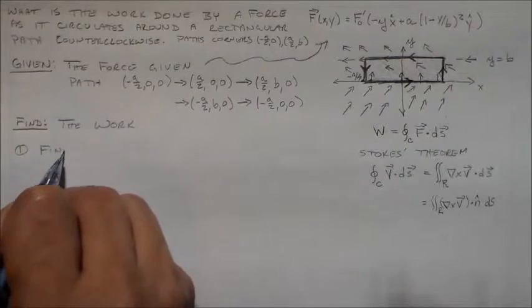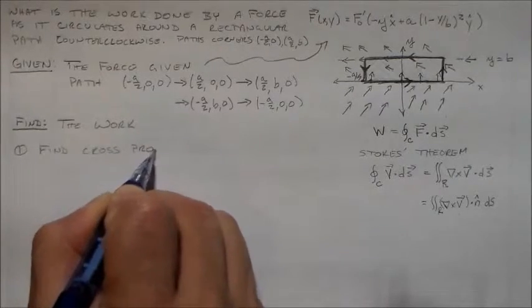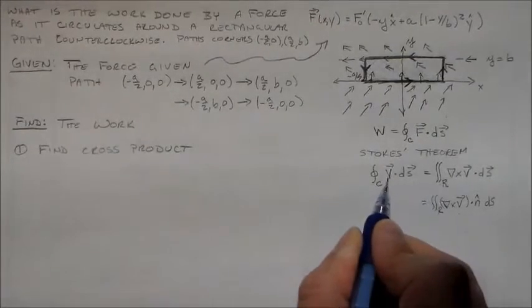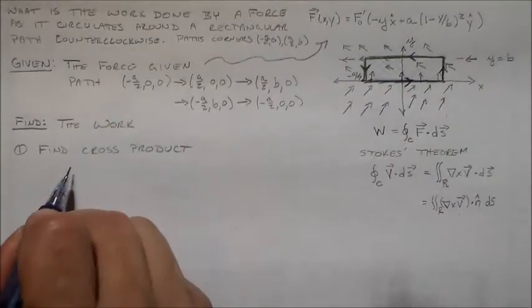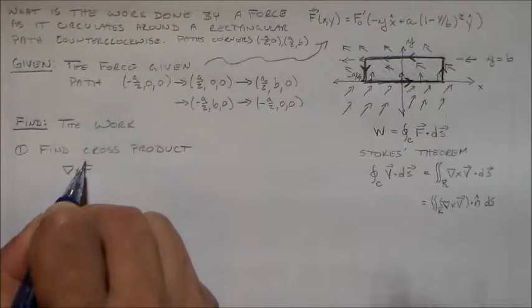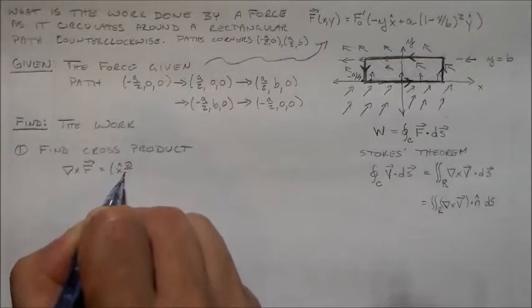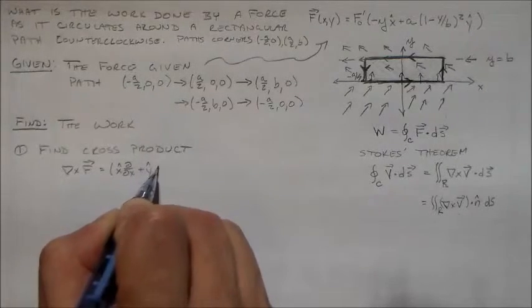Because I've written it down here. I already know what this vector is. That vector is f. So, we have del cross f is equal to all this fun stuff. Everybody loves writing this out in full. I know x, d/dx, y, d/dy, and z, d/dz.